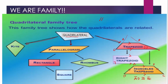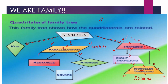Another kind of quadrilateral is the parallelogram. If trapezoid has one pair of parallel sides, a parallelogram on the other hand is a quadrilateral with two pairs of parallel sides. In parallelogram MNOP, segment MN is parallel to segment PO, and segment MP is parallel to segment NO. So if there are two pairs of parallel sides, the quadrilateral is called a parallelogram.